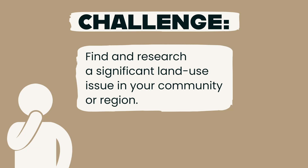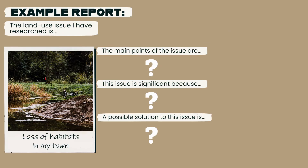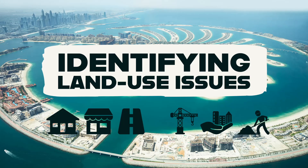Now here's a challenge for you. Find and research a significant land use issue in your community or region. You'll need to identify a land use issue that is important and relevant to your community — this might be a current controversy or a long-standing issue. Once you've identified it, research it by looking up news articles, talking to people involved, or visiting relevant websites. After completing your research, summarize the main points of the issue, explain why it's significant, and describe any proposed solutions or ongoing debates. Write a short report or create a slideshow, then share your findings with your classmates or present them to the class. Good luck.